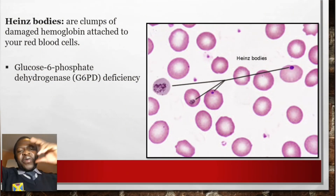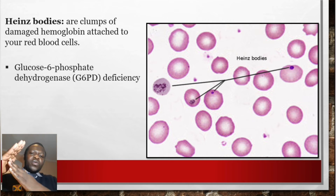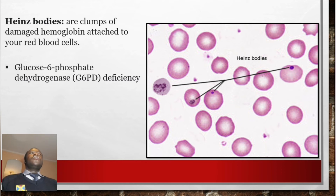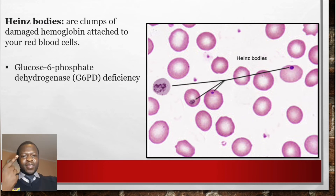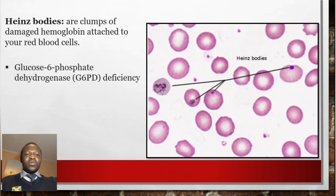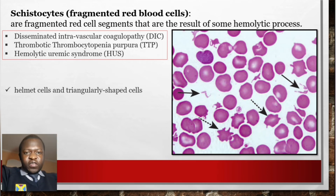Heinz bodies are clumps of damaged hemoglobin attached to the inner wall of erythrocytes. They are mainly found in glucose-6-phosphate dehydrogenase (G6PD) deficiency. Macrophages that come and 'eat' the corner of the cell can form bite cells — these are directly related to Heinz bodies.